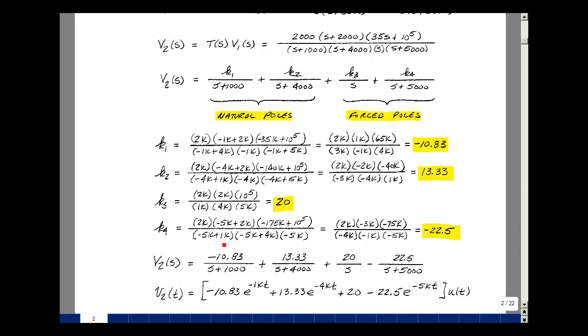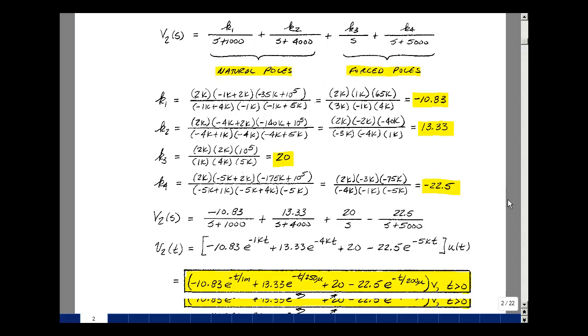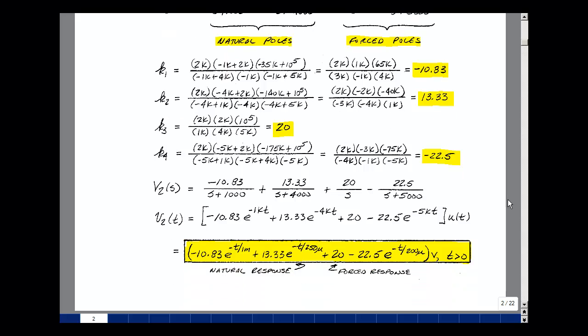So then V2(s) would be k1, which is minus 10.83 divided by s plus 1,000, plus 13.33 divided by s plus 4,000, plus 20 divided by s, and then minus 22.5 divided by s plus 5,000. Take our inverse Laplace transform using our table from chapter 9. We have minus 10.83 times e to the minus 1,000t, plus 13.33 times e to the minus 4,000t, plus 20, and then minus 22.5 times e to the minus 5,000t, and all this multiplied by u(t).